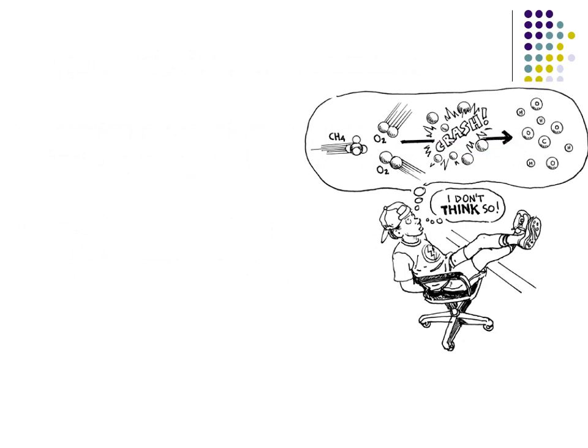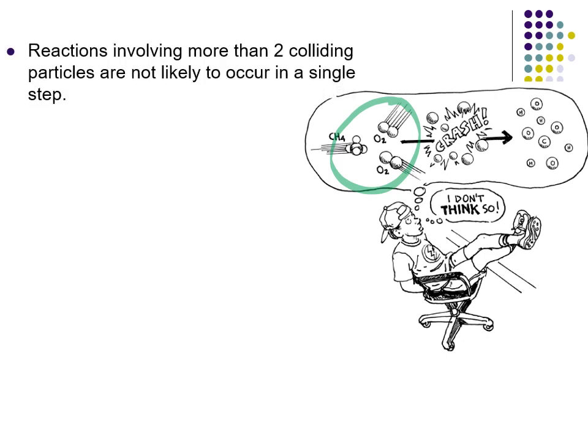Consider methane reacting with oxygen: CH4 plus two oxygen molecules forms carbon dioxide and water. But if you imagine that happening at the particle level using collision theory, the chances of having three particles collide in exactly the right spot, with the right energy and the right geometry, is relatively rare. However, methane burns super easily, and so does much more complex things than methane. Anything involving more than two colliding particles is relatively unlikely to occur all that often. So what happens instead is that it happens in multiple steps — that's the mechanism.